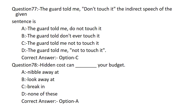Hidden cost can dash your budget. Option A: NIBBLE AWAY AT. Option B: LOOK AWAY AT. Option C: BREAK IN. Option D: None of these. Option A is the correct answer — NIBBLE AWAY AT. Hidden costs can NIBBLE AWAY AT your budget.